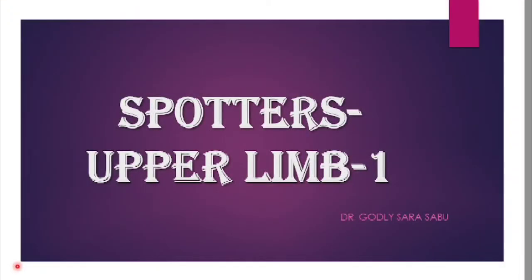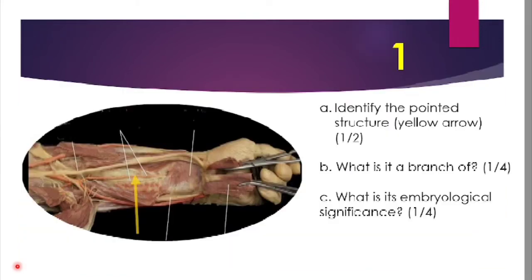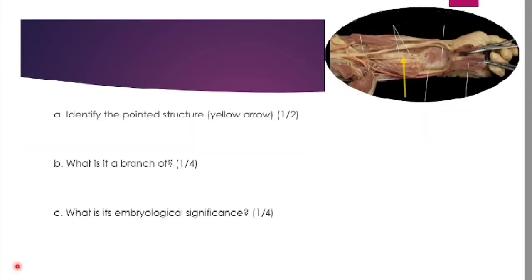Hello dear students, today we'll discuss some of the spotters of the upper limb. The first question is: identify the structure shown by the yellow arrow, what is it a branch of, and what is its embryological significance? From the figure you can understand that it is a dissected specimen of the upper limb and the pointed yellow arrow shows an artery known as the anterior interosseous artery, which accompanies a nerve.